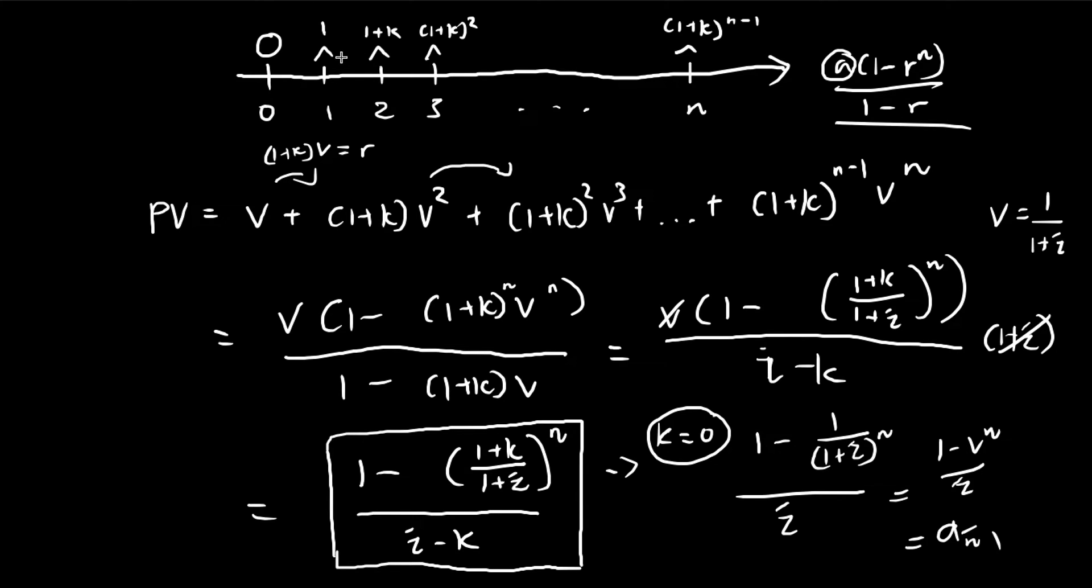each payment is just going to be equal to 1, so that's just the normal annuity immediate. This is just an expansion of the original idea.